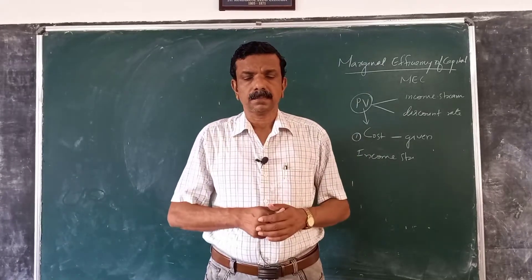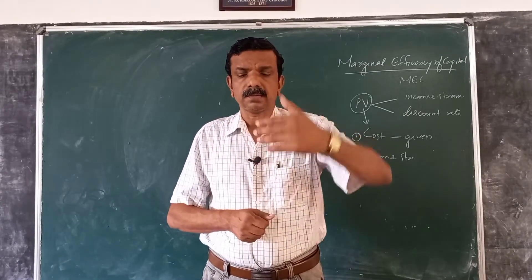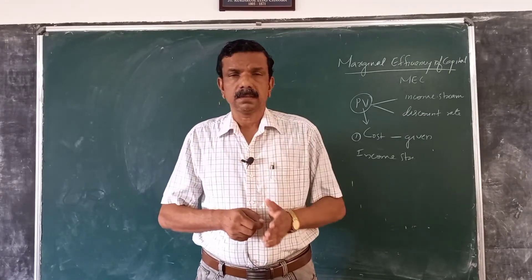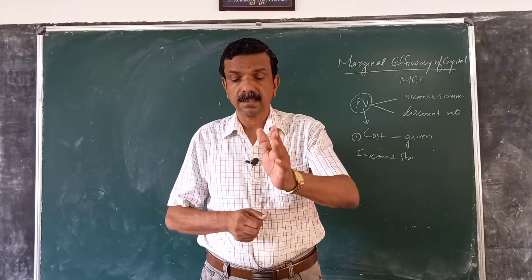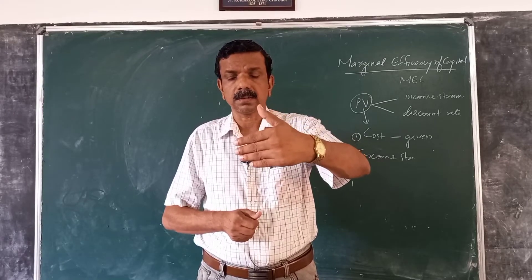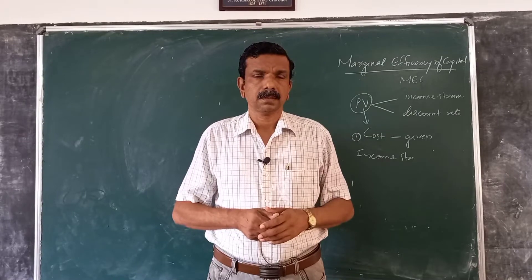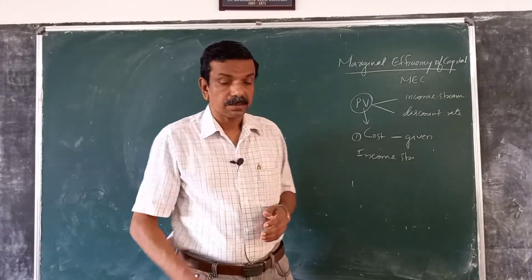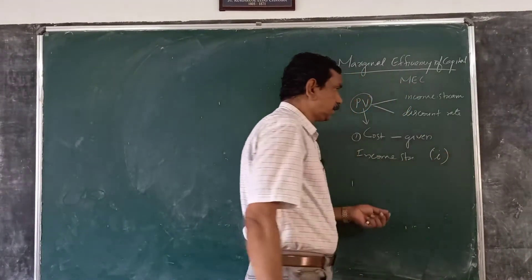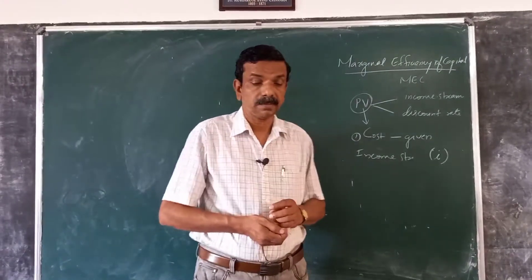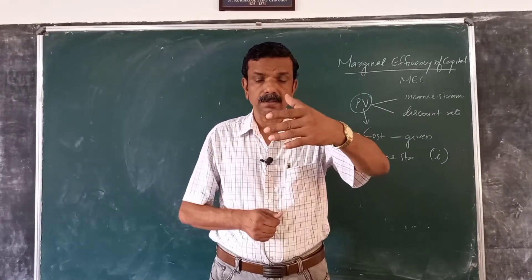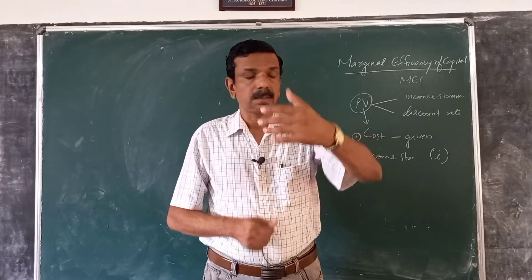In this case, we want to find out the discount rate that will make the present value of the income stream produced by the capital good just equal to the cost of the capital good.